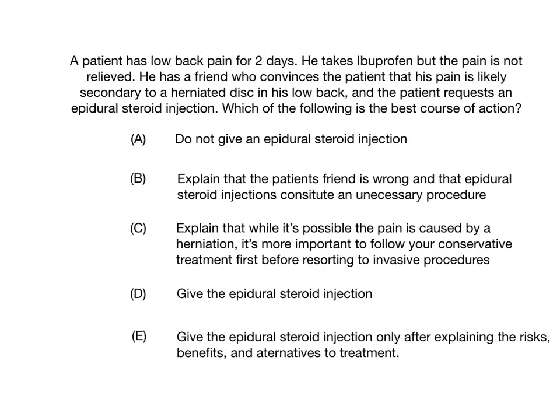Case eight: A patient has low back pain for two days. He takes ibuprofen but the pain is not relieved. A friend convinces him his pain is likely from a herniated disc, and the patient requests an epidural steroid injection. Which of the following is the best course of action? The answer is A — do not give the epidural steroid injection. Low back pain is the number one primary care complaint in the United States. Early on, you treat it conservatively with rest, ice, physical therapy, stretching, and swimming. An epidural steroid injection this early on without MRI confirmation is an unnecessary procedure.